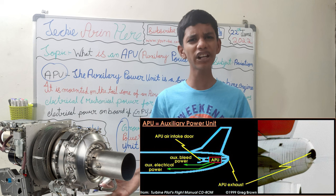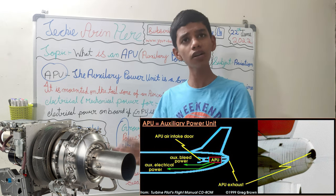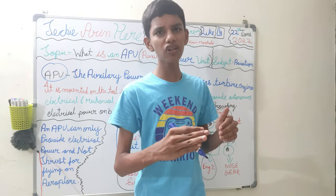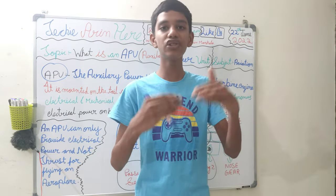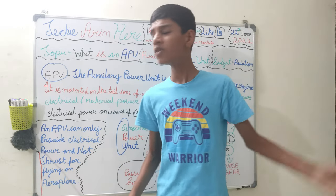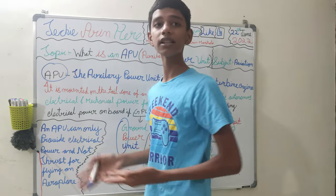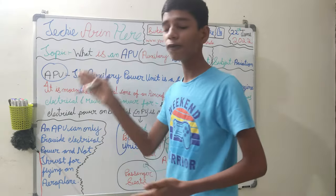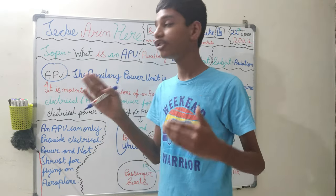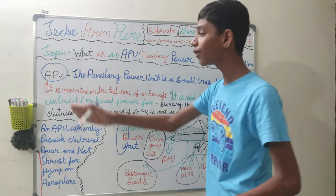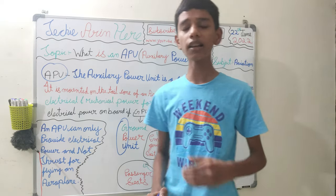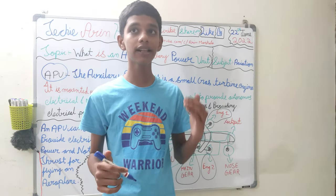We all know how generators work — they take diesel, run it through their engines, and produce electrical supply. The APU is also a kind of generator: it takes fuel, burns it, generates electricity, and provides it to the entire airplane.